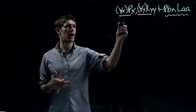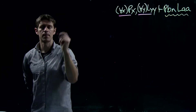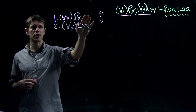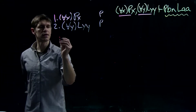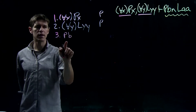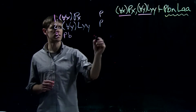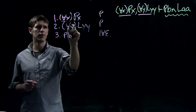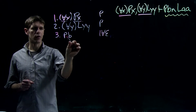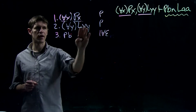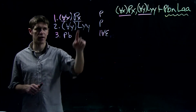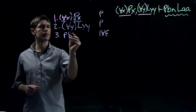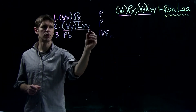We'll set up the proof by writing out the two formulas. The goal will be to reason to the conclusion. We'll start by taking the first formula, AX PX, and reasoning to PB. We derive PB using line one and the universal elimination rule, which allows us to reason from a universally quantified formula by removing the universal quantifier and replacing every bound variable X with any name we want. The replacement must be uniform.